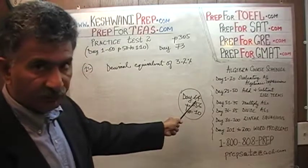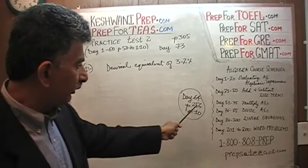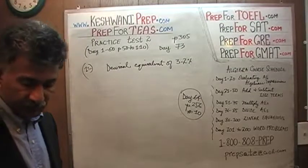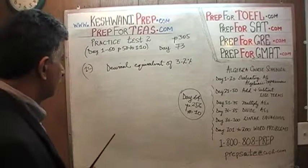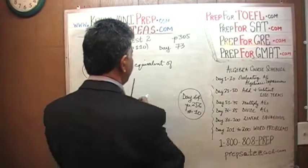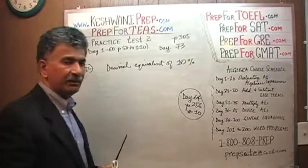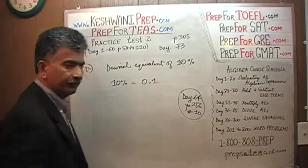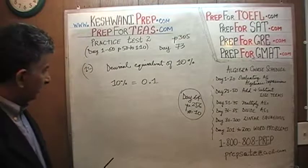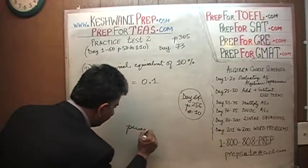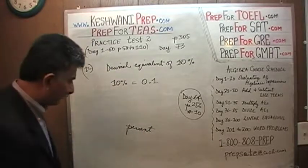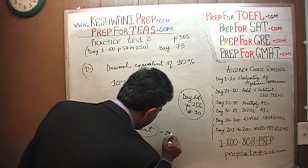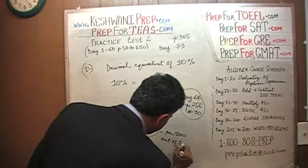We're going to do the exact same thing we did before — make up a simpler version. Ask yourself: what is the decimal equivalent of 10%? How do we write 10% in decimals? The word percent literally means per 100, or out of 100. So 10% means 10 out of 100.